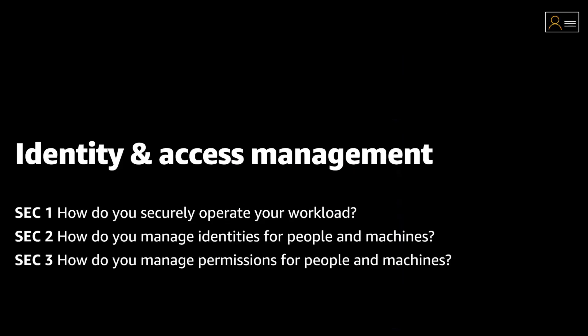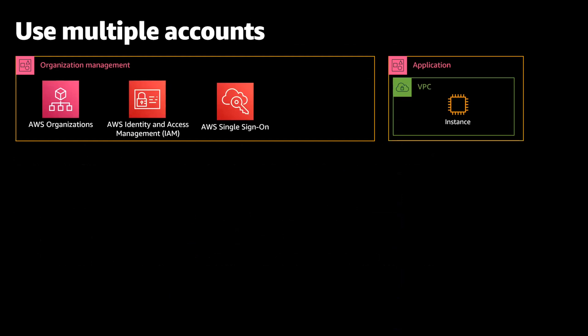The first area of the security pillar is identity and access management, which can be divided into three considerations: who has which access to what? The best approach is through a multi-account strategy. Rather than employing a single account in AWS, it's recommended to set up different AWS accounts for different purposes, isolating workload components and controlling access at a coarse level. Consider using AWS Control Tower, which provides the easiest way to set up and govern a secure multi-account AWS environment and helps implement AWS best practices by default.